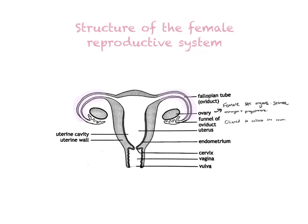At the end of the fallopian tube, you have what we call the funnel of the oviduct or the funnel of the fallopian tube. The funnel is ciliated, and cilia have the job of brushing substances in a particular direction. In this case, they brush the ovum or the egg cell into the fallopian tube or oviduct, because the ovum will be released somewhere around the ovary.